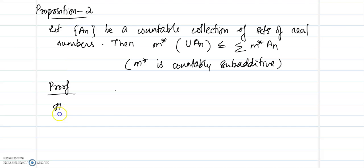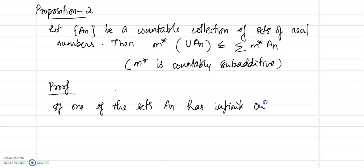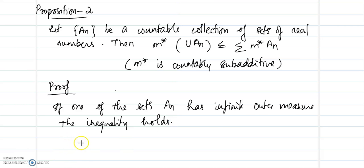So, let us first write that: if one of the sets Aₙ has infinite outer measure, the inequality holds. Now let us look at the case where all M*(Aₙ) are finite. In that case we need to show that M*(∪Aₙ) is less than or equal to the summation of M*(Aₙ).